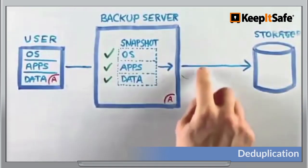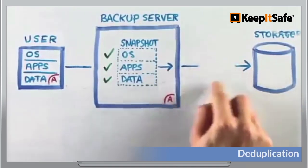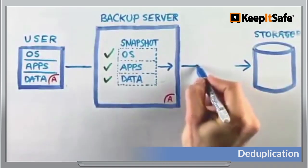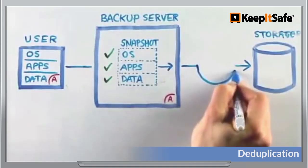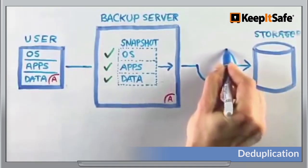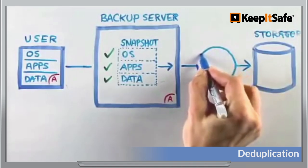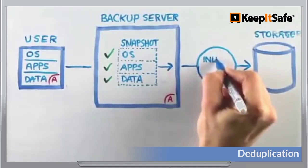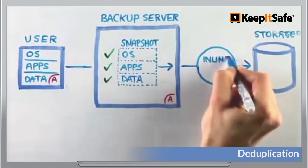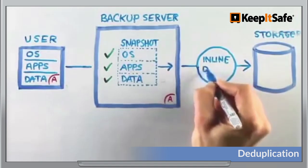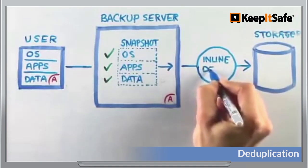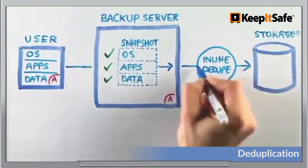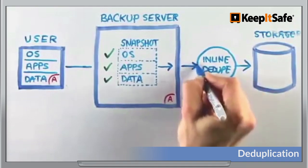Following along the lines of working at the block level, Keep It Safe DR also runs inline deduplication before it reaches storage. This feature looks across all blocks in storage for redundancies and eliminates them from the incoming backup. This process keeps the storage lean, clean and unburdened with additional processing.